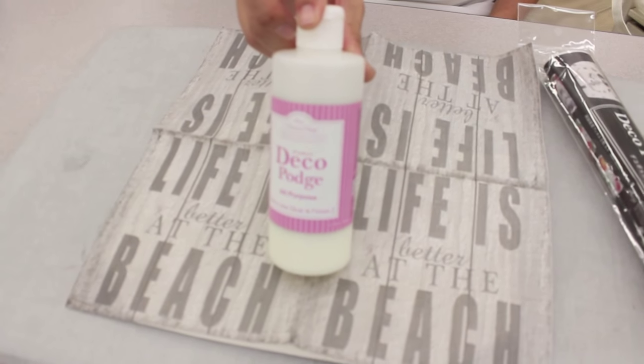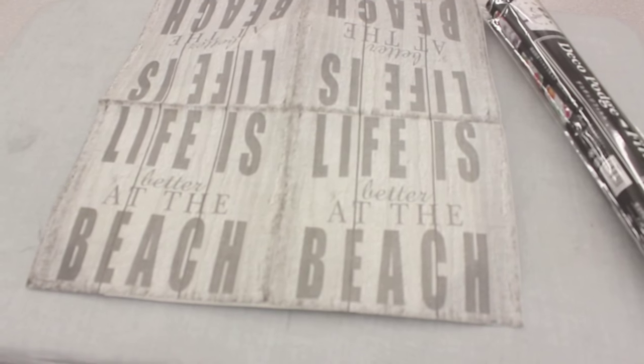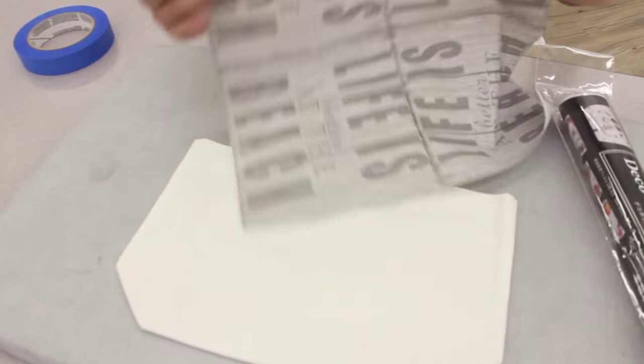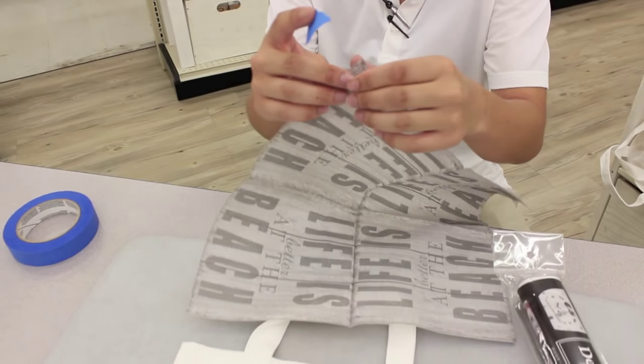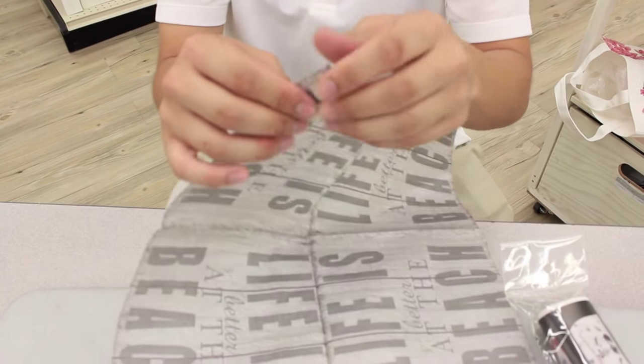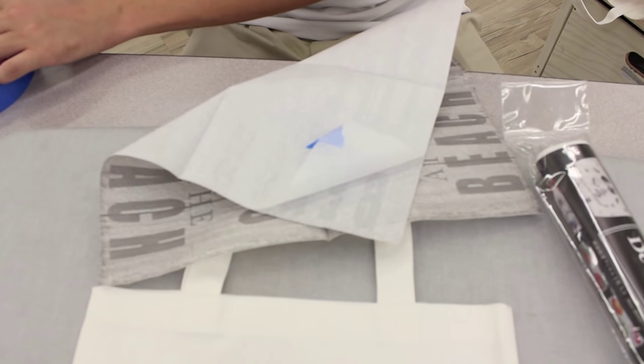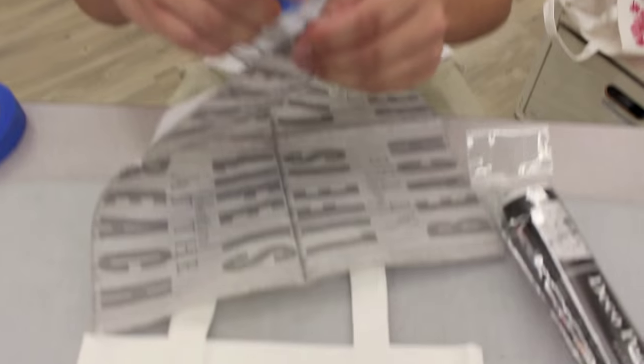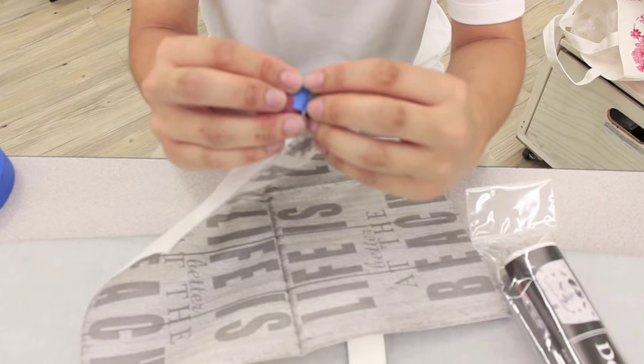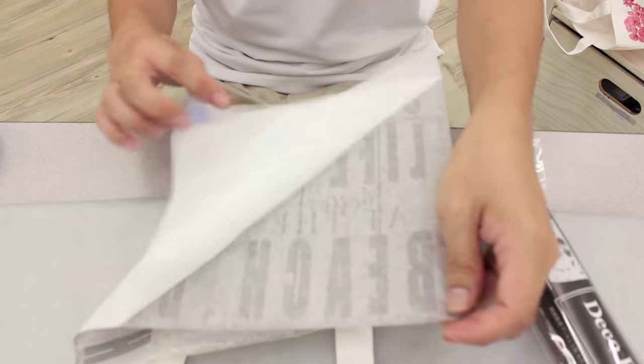Okay, so we will get started. The first thing that you will do is take a piece of painter's tape or you could even take washi tape and you're going to put it on the back side of the napkin. This allows it and makes it really easy for you to peel back the layers of the napkin. There's actually three layers on a typical napkin and we want to get to that top layer that has the most ink on it.